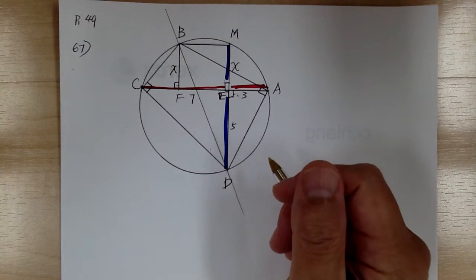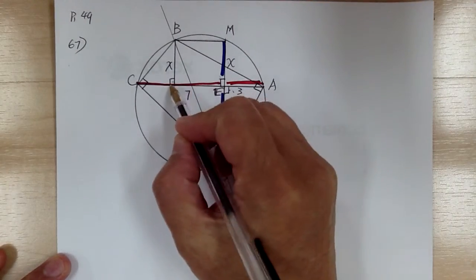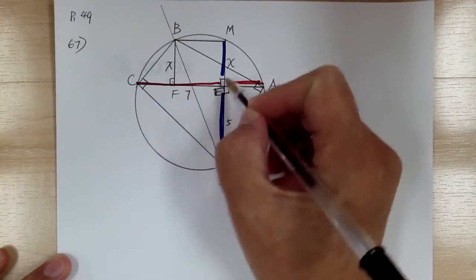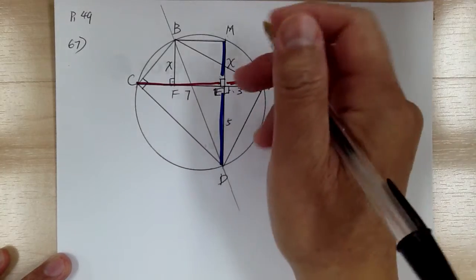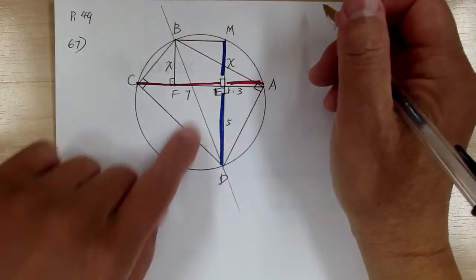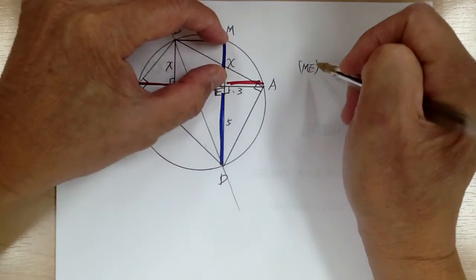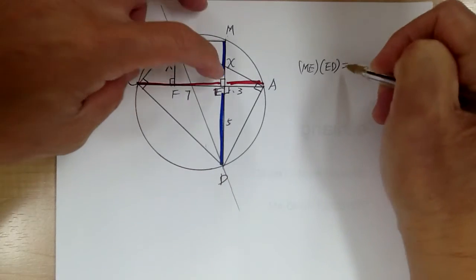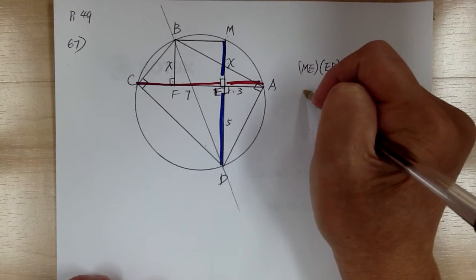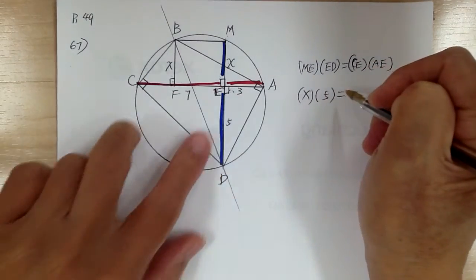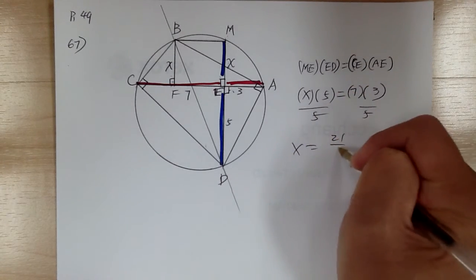The key is recognizing that when these segments are perpendicular, extending them forms a rectangle, allowing us to slide BF over and write the power of a point equation. So: x times 5 equals 7 times 3. Divide both sides by 5: x equals 21 over 5.